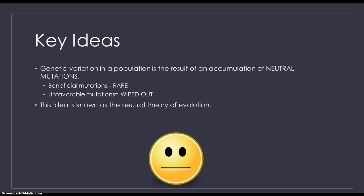But it can't be A either because favorable mutations are very rare. So the answer has to be C. Genetic variation must be an accumulation of neutral mutations. And that is known as neutral theory of evolution.